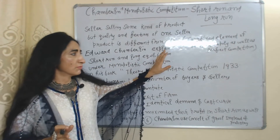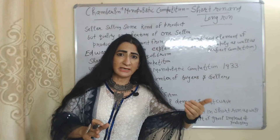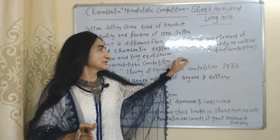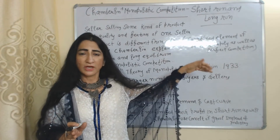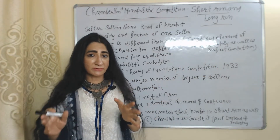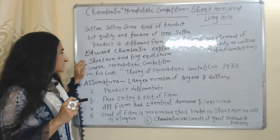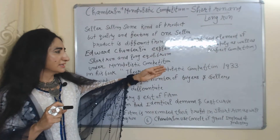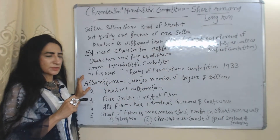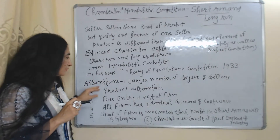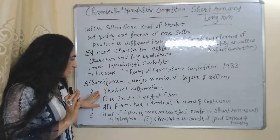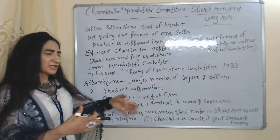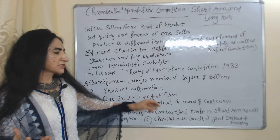Monopolistic competition combines elements of both monopoly and perfect competition. Each seller has a monopoly in their own unique product, but at the same time they face many competitors. Chamberlain explained short and long run equilibrium in his book 'The Theory of Monopolistic Competition' in 1933. The assumptions of this model are: large number of sellers and buyers, product differentiation, free entry and exit of firms, identical demand and cost curves for all firms, and profit maximization as the goal.